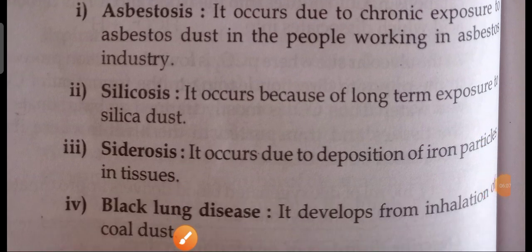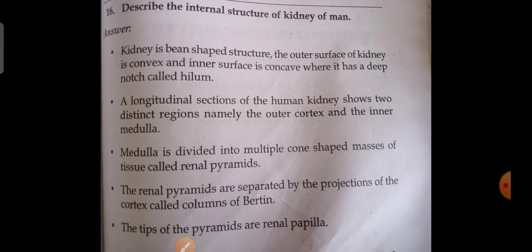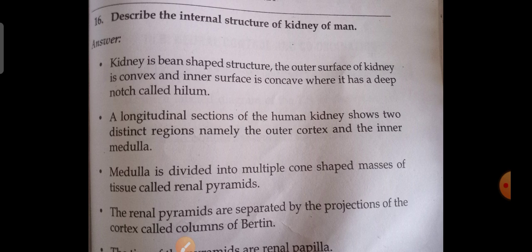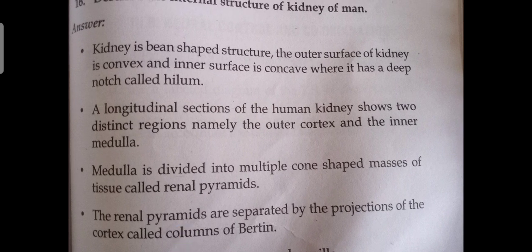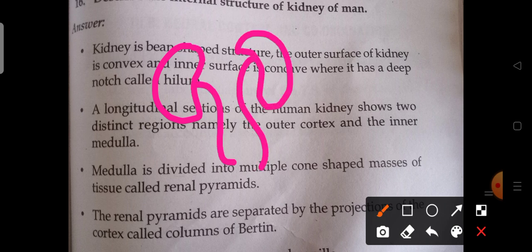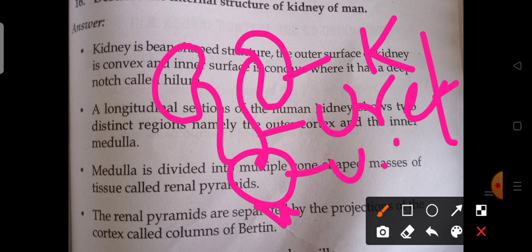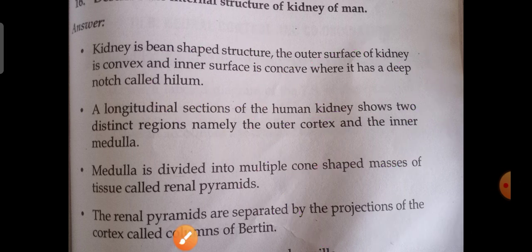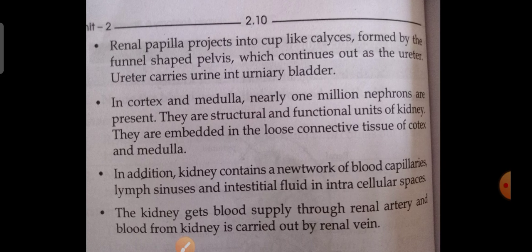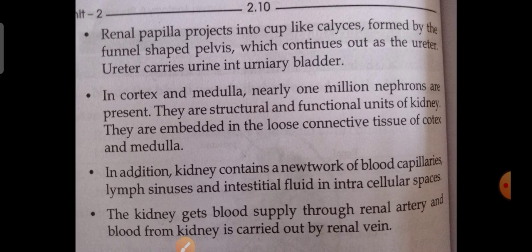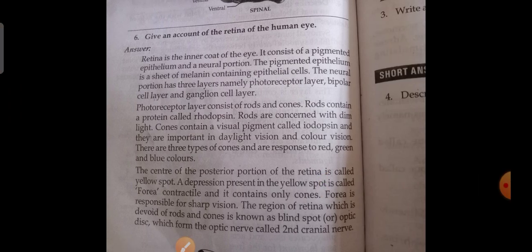Siderosis is the deposition of iron particles in tissues. Black lung disease develops from inhalation of coal dust — coal is black, so it's black dust. Next: describe the internal structure of the kidney. You already know about this from anatomy and physiology. At least try to draw the diagram. The urinary system: kidneys, ureters, urinary bladder, urethra. The kidney is bean-shaped; outer surface is convex, inner surface is concave. Try to write a little bit. Next: give an account of the retina of the human eye — at least draw the eye diagram.